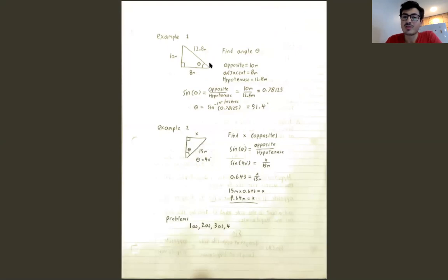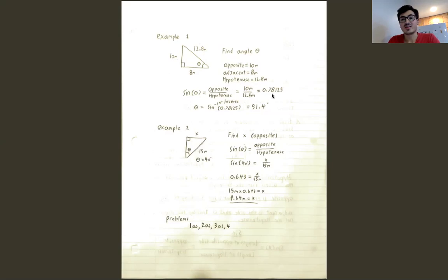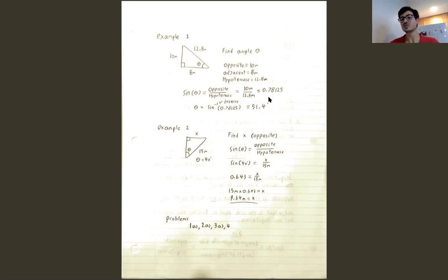We have a triangle and we want to figure out angle theta — this symbol here is theta. We're given all the side lengths: the opposite is 10 meters, adjacent is 8 meters, and hypotenuse is 12.8 meters. So sine of theta equals opposite over hypotenuse — that's 10 divided by 12.8 — giving us a ratio of 0.78125. When doing angles, even the fifth digit can change the answer somewhat, so I like to keep at least five digits.